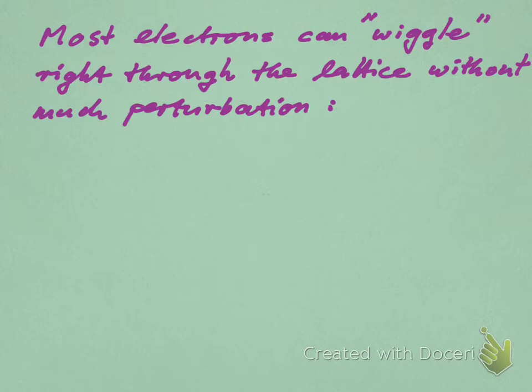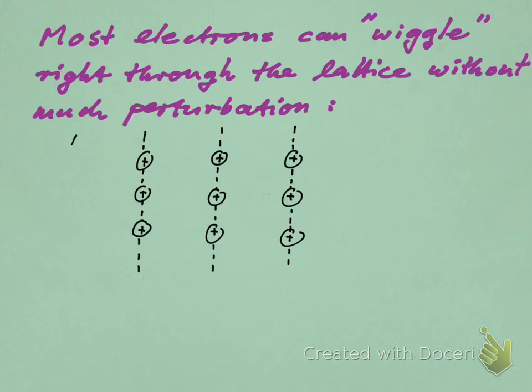Most electrons can sort of wiggle right through the lattice. And what I mean by that is some picture like this: here's our ion lattice with some clearly defined lattice planes, the dotted lines indicating the lattice planes, and here's an electron now traveling through at some kind of wavelength. I would say that the lattice doesn't perturb the electron very much in general.